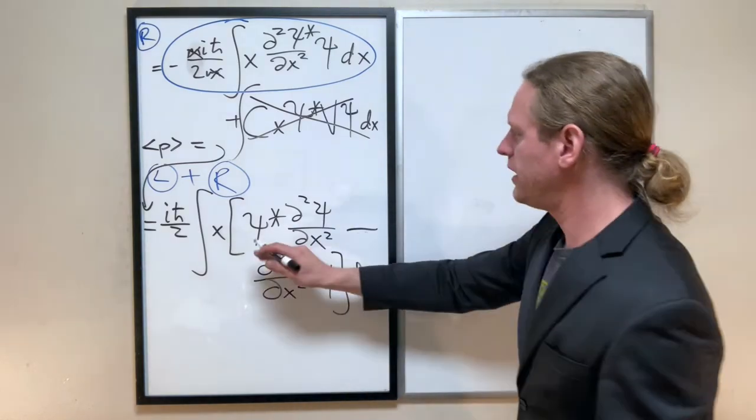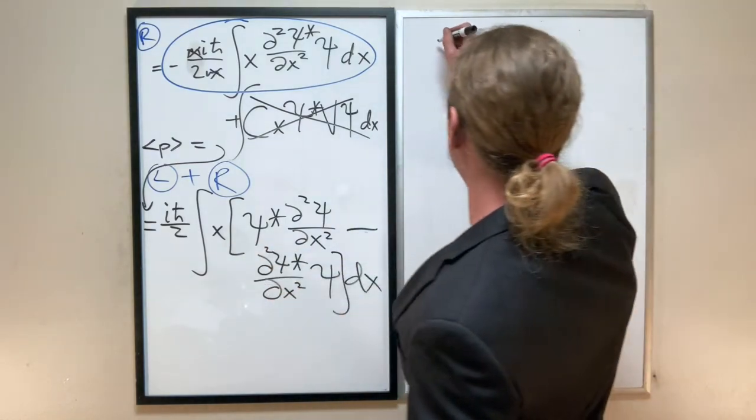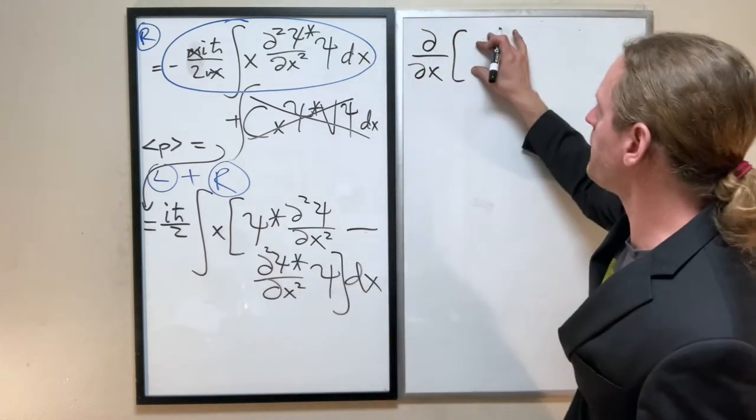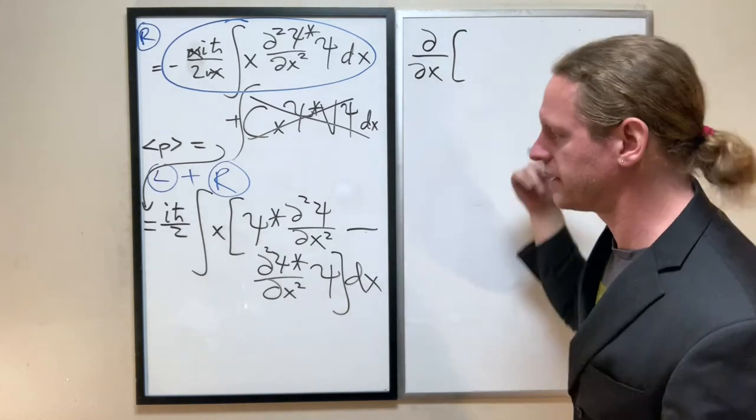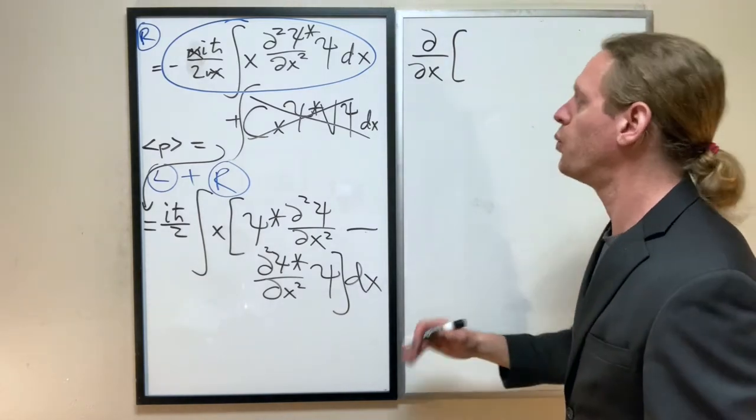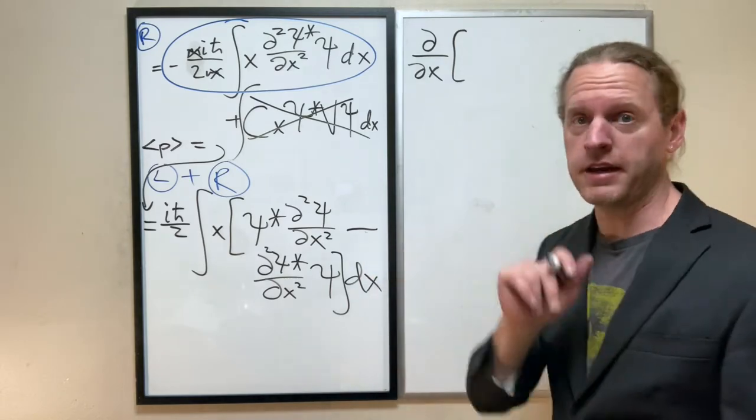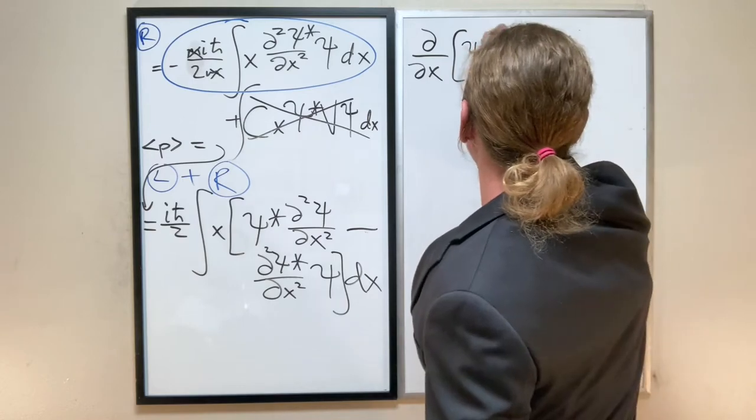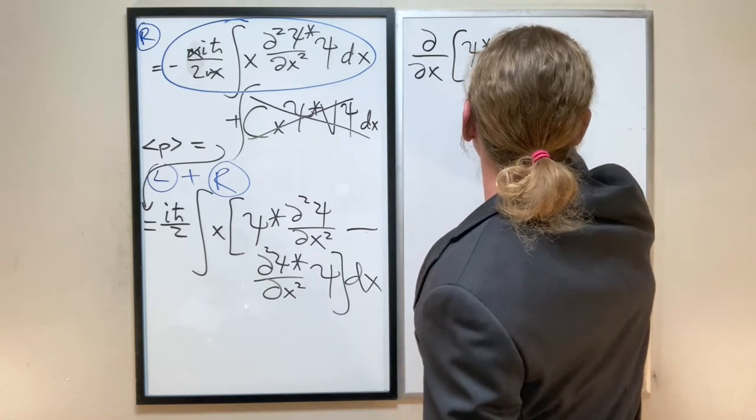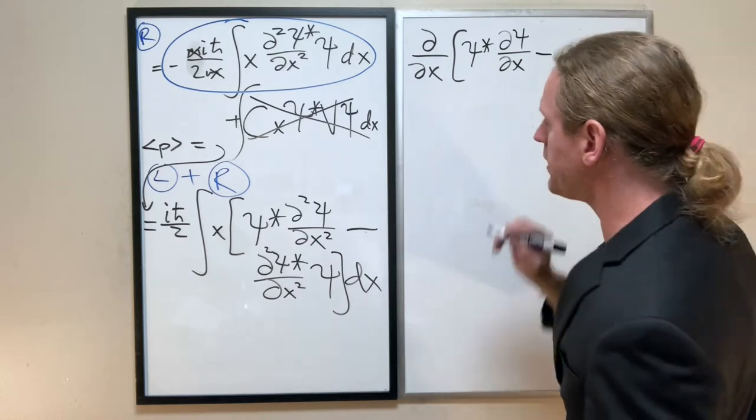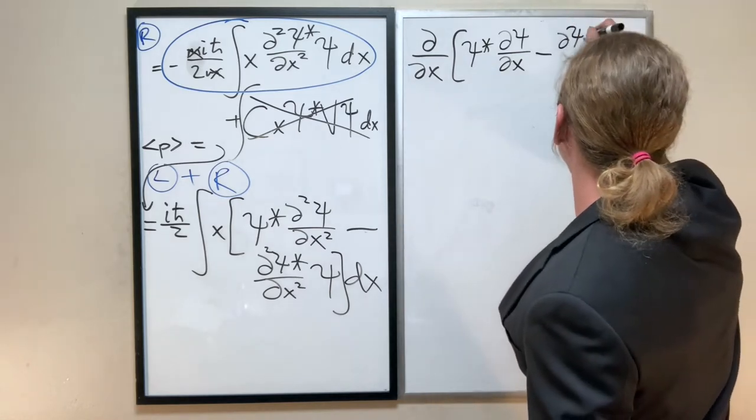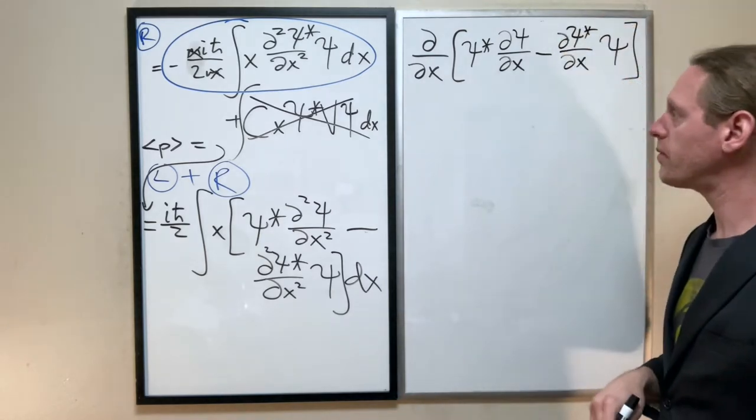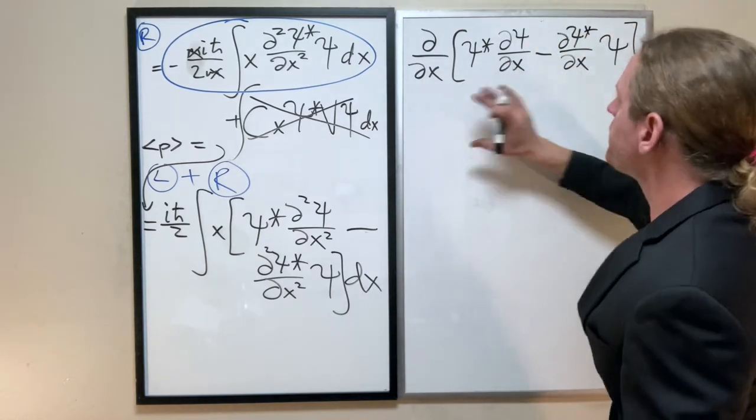And by that I mean, if this integrand here is actually just the d/dx of something only involving ψ and dψ/dx, we can simplify that. And here is my guess. Let's instead try to take the derivative of ψ* dψ/dx and we'll keep that minus dψ*/dx times ψ. So we're just, again, this is just a guess.